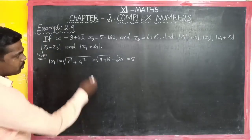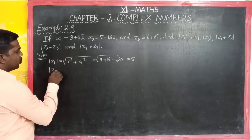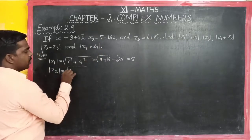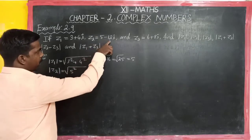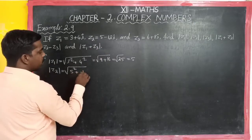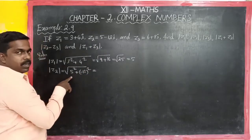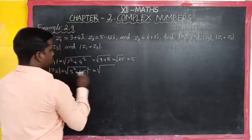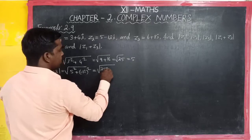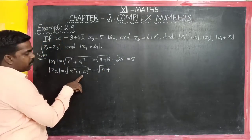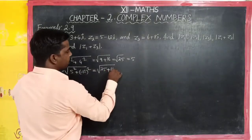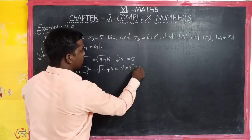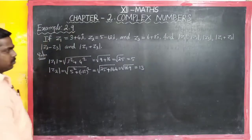Next is modulus of z2, which is equal to square root of 5 squared plus minus 12 squared — that is, the real part squared plus the imaginary part squared. Square root of 25 plus 144. So square root of 169, which equals 13.